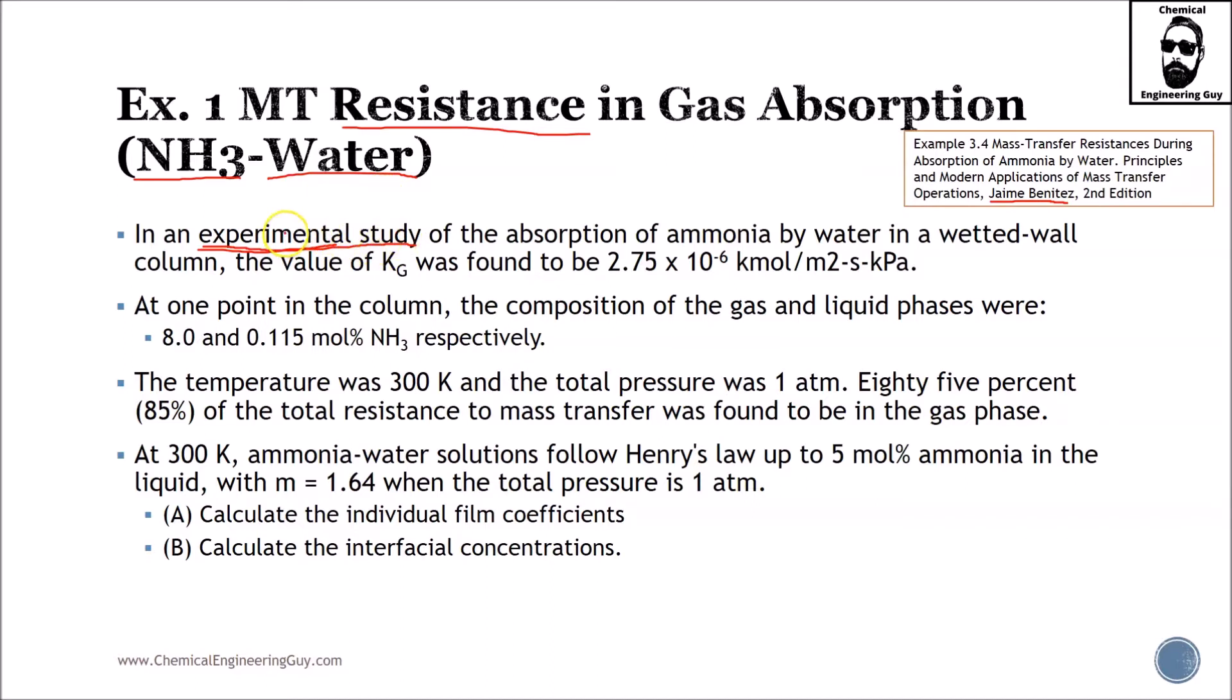Assuming that the experimental data is correct, we have absorption of ammonia by water in a wetted wall column. This is the column or the wall. We have a fluid going down which should be water or solvent, and we have a gas stream containing ammonia and water right here.